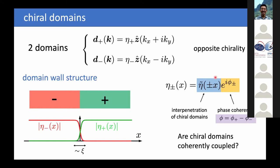We parametrize the order parameters with a modulus — which for one order parameter behaves like the green line, and for the other like the red line, just switching sign — and a phase. The question is how the two domains couple: is there a phase-coherent coupling between the two domains? We will see this is not entirely trivial, and that there are selection rules which may not admit such coherent coupling.